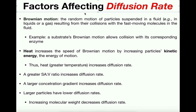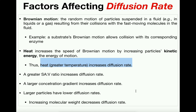The fourth factor that affects diffusion rate is heat. Heat or greater temperature increases diffusion rate. When particles — such as ions or glucose molecules — are in a medium with a higher temperature, the rate of diffusion increases. This is due to an increase in the particle's kinetic energy, which is the energy of motion. Increasing temperature makes particles move faster, which increases their rate of diffusion.